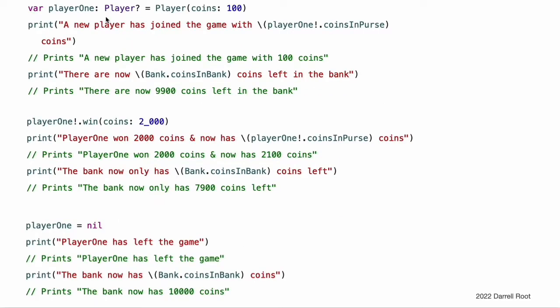A new Player instance is created with the request for 100 coins if they are available. This Player instance is stored in an optional Player variable called playerOne. An optional variable is used here because players can leave the game at any point. The optional lets you track whether there is currently a player in the game. Because playerOne is an optional, it is qualified with an exclamation point when its coinsInPurse property is accessed to print its default number of coins and whenever its win-coins method is called.